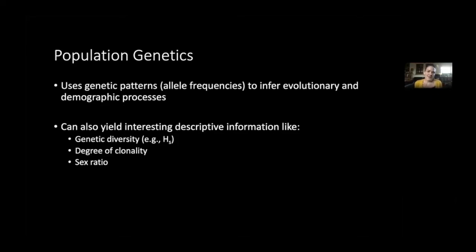One really nice thing about the advent of next generation sequencing is that it's now fairly feasible and relatively low cost to generate very high resolution genotype data for individuals from many populations. With those data, you can both look at evolutionary processes as well as answer basic descriptive things like how diverse a particular population is genetically compared to another one, or how clonal it is. These data can also be used to extract sex ratios from organisms that are otherwise tricky to determine the sex of.